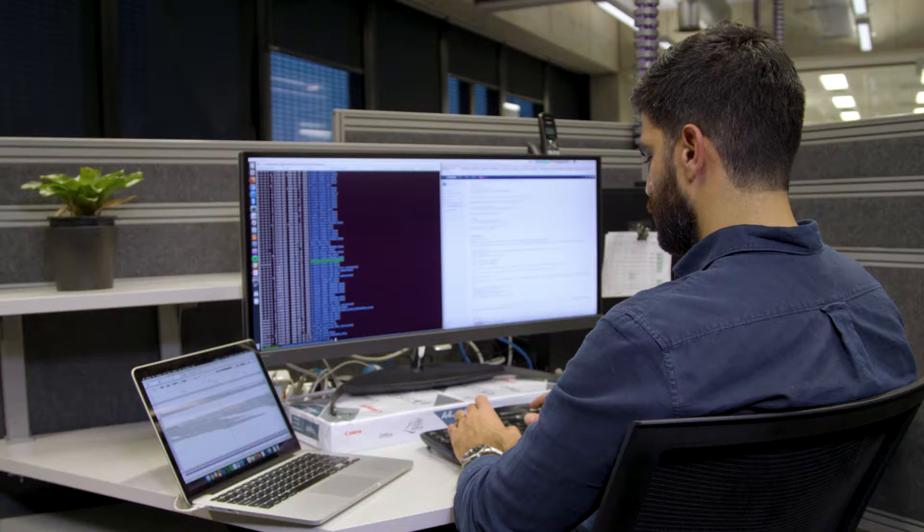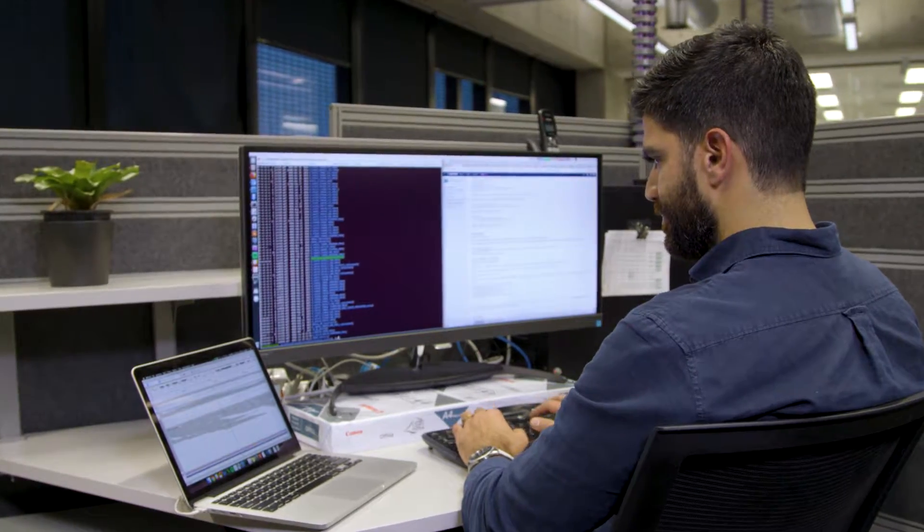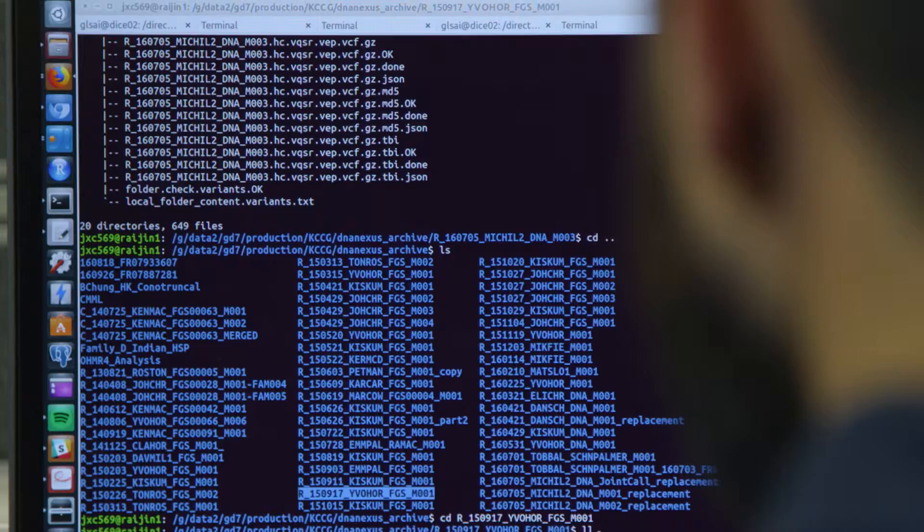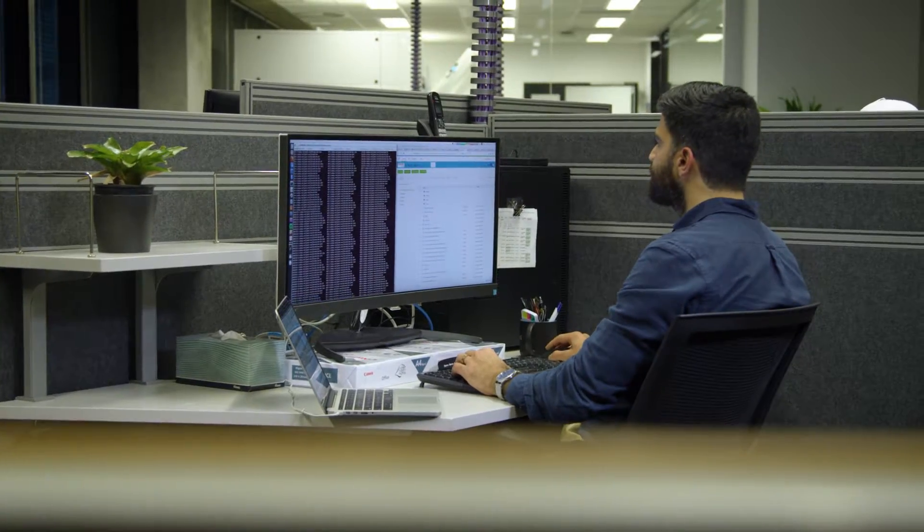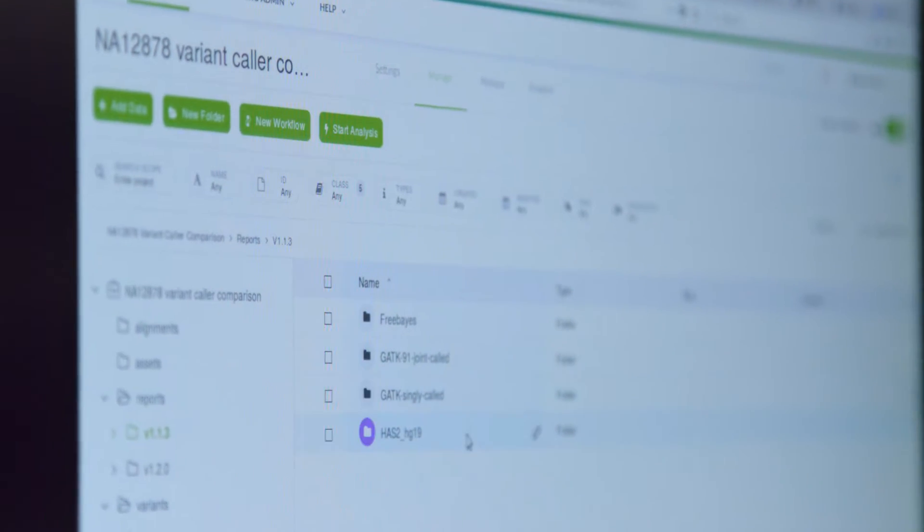The data that comes off the sequencing machines can't be used as it is. It needs to be analyzed and processed and also annotated before it's useful for a genomicist or a clinician. The data is aligned and compared to a reference genome and that helps us find variations in the genome. These variations are what make us different but they can also be disease-causing.